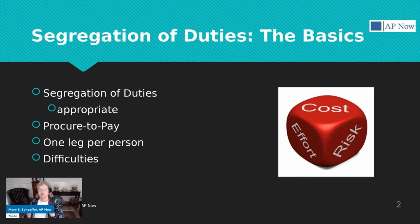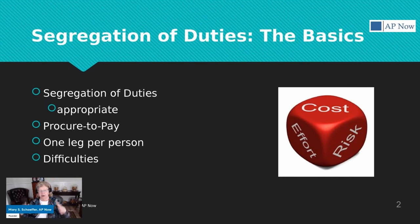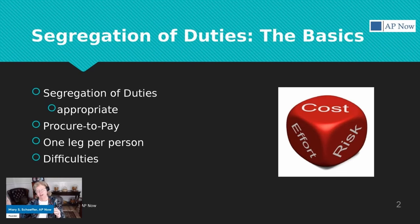I want to start off by talking about the basics of separation of duties, or what I call appropriate separation of duties. What this means when we're talking about payments and invoice processing and basically the entire accounts payable function is making sure that no one individual can handle more than one leg of the procure-to-pay process, starting with the issuing of the purchase order and ending with the follow-up work done after the invoice is paid and the regulatory reporting.